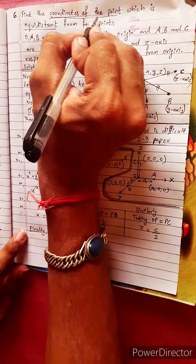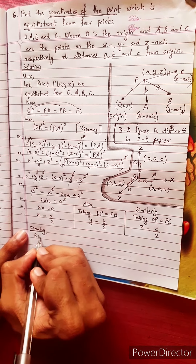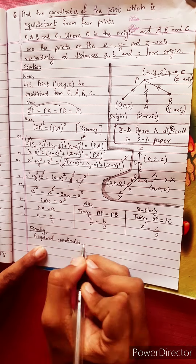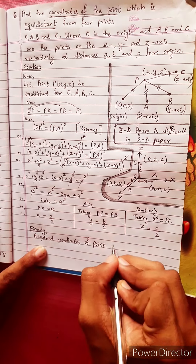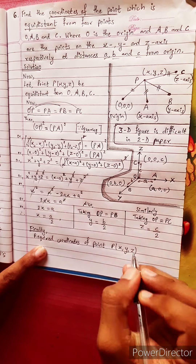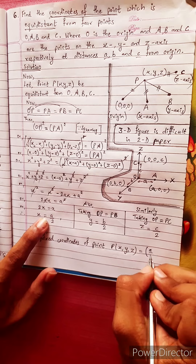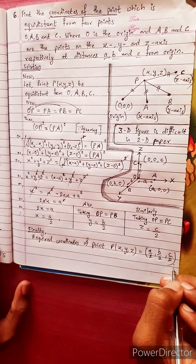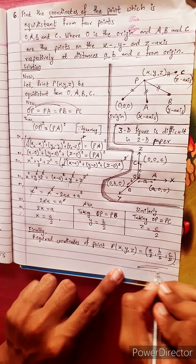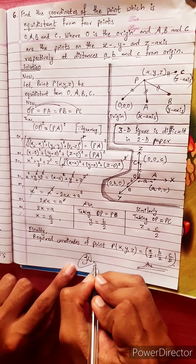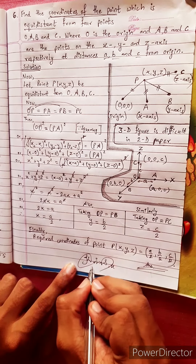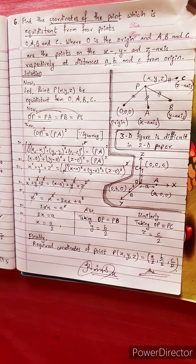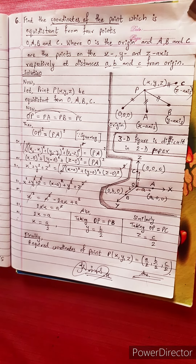Finally, the coordinates of the point P are (x, y, z) equals (a by 2, b by 2, c by 2). This is the required answer. Bye bye and thank you.